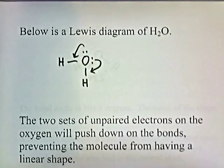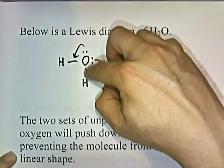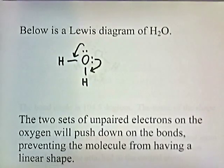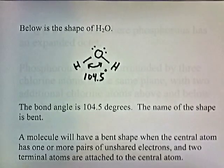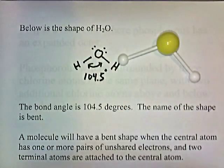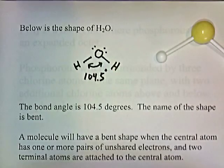Here is a Lewis diagram of water. It has two pairs of unshared electrons, and they push down on the bonds. The two sets of unpaired electrons on the oxygen push down on the bonds, preventing the molecule from having a linear shape. That is the actual shape of H₂O. The bond angle is approximately 104 degrees. The name of the shape is bent. A molecule will have a bent shape when the central atom has one or more pairs of unshared electrons and two terminal atoms attached to it.